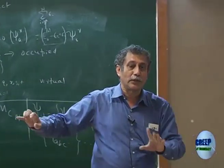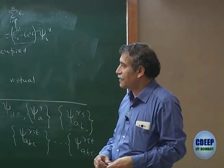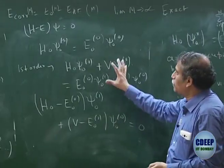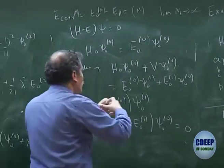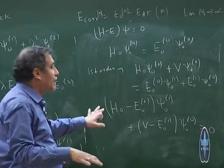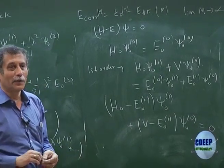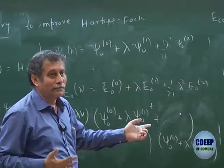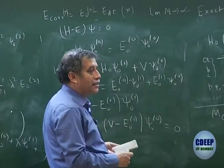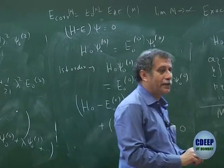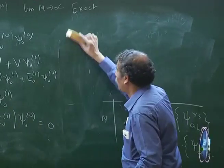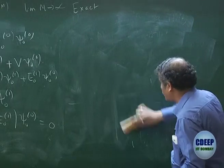You should be able to write second order onwards — we will do that in the next class. So to solve the first-order equation, you project with ψ₀⁰* and integrate, giving the scalar products: ⟨ψ₀⁰|(H₀−E₀⁰)|ψ₀¹⟩ + ⟨ψ₀⁰|(V−E₀¹)|ψ₀⁰⟩ = 0.